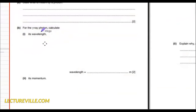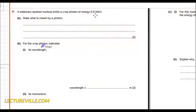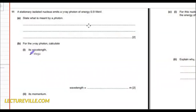Now for the gamma ray photon, calculate the wavelength. The energy of the photon is 0.51 megaelectron volt, and we need to find the wavelength.